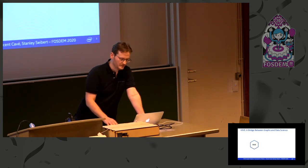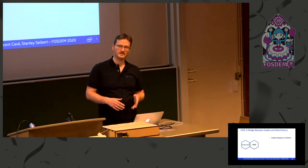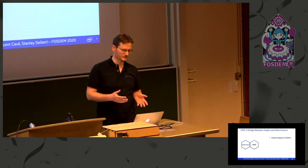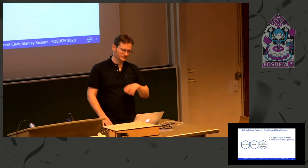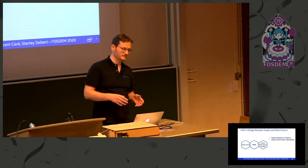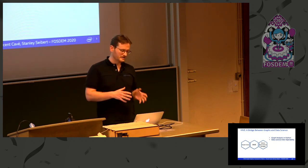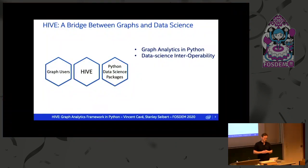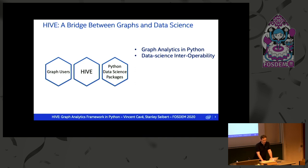What we're trying to do with Hive is to build a Graph Analytics API in Python for graph users. Because you're operating in Python, you probably want it integrated into the whole data science ecosystem. The kind of interoperability we want to provide is that it's easy — for instance, if you have containers like NumPy arrays or data frames, you can convert them into graphs. This sort of already exists if you think of NetworkX, but the issue with it is that it's pretty slow.